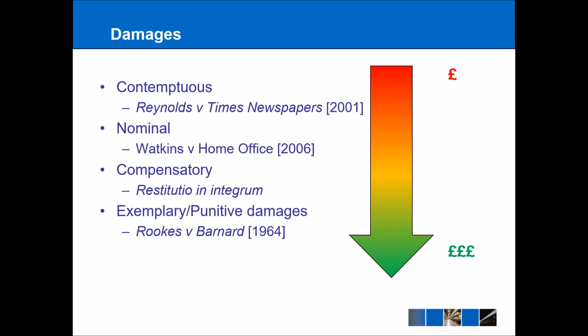In a similar fashion, we have nominal damages, and the example here is Watkins v Home Office 2006. Again, a tort has been committed, but the claimant has not really suffered as a result of it, and so they win the case but are not entitled to much in the way of damages — in the Watkins example, they got five pounds. For both contemptuous and nominal damages, it's important to note that they can often result in a costs award against the claimant, so it can cost the claimant more money to bring the case than they would actually make from the compensation itself. The court is really acting to discourage these types of cases in the future.